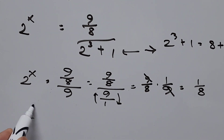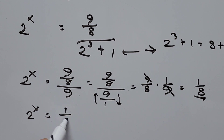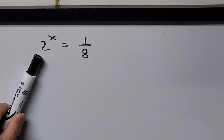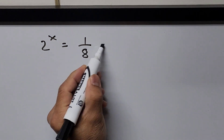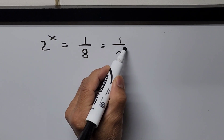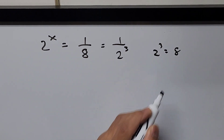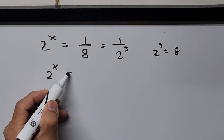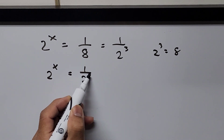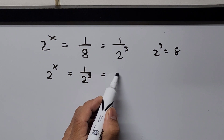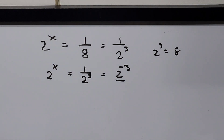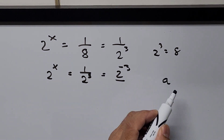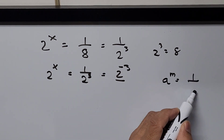So 2 to the power of x equals 1 over 8. We have isolated the exponential term with the variable. The right-hand side can be simplified as 1 over 2 to the power of 3, since 2 cubed is 8. This can be rewritten using the negative exponent formula: a to the power of negative m equals 1 over a to the positive m.